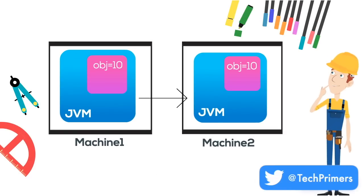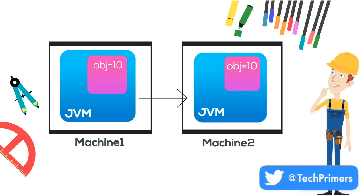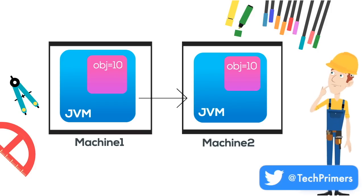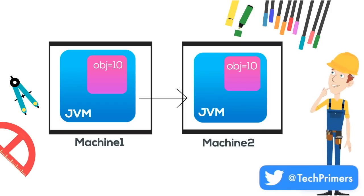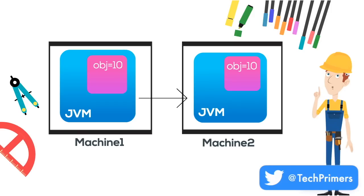Now, how do we serialize objects? How does the JVM do it? The JVM creates a stream of bytes which the machine and the network can understand, and it gets shipped over the network from machine 1 to machine 2, where the JVM recreates these objects from those bytes.